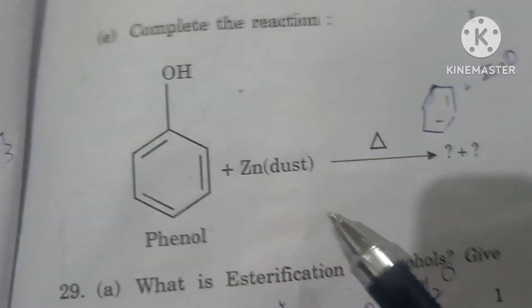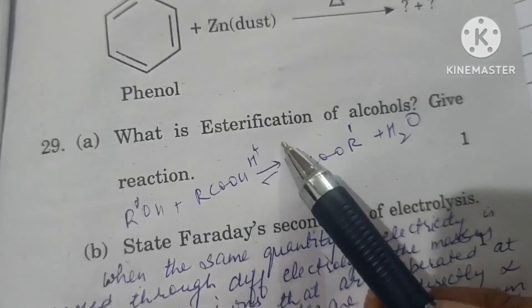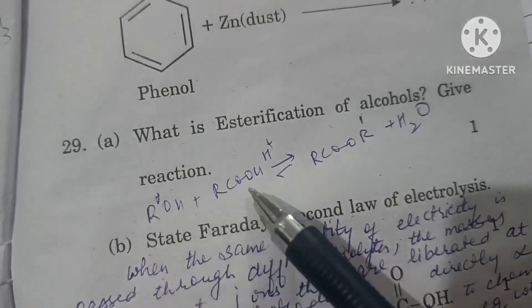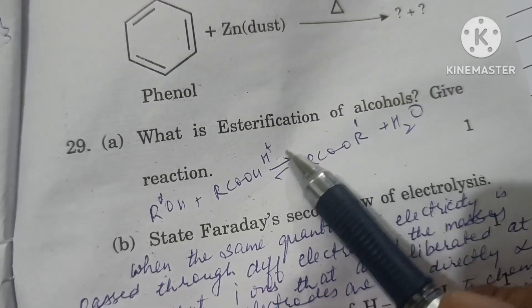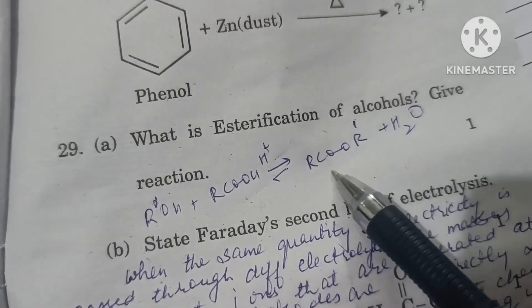If we heat phenol with zinc dust, the products formed are benzene and zinc oxide. Esterification of alcohol: alcohol is reacted with carboxylic acid in presence of H+ to form ester and water.